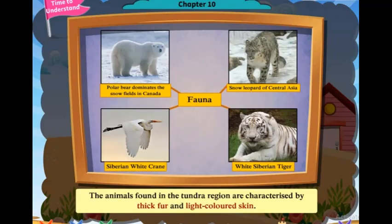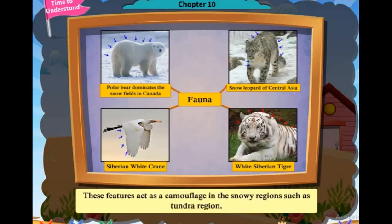The animals found in the tundra region are characterized by thick fur and light-colored skin. These features act as camouflage in snowy regions such as the tundra.